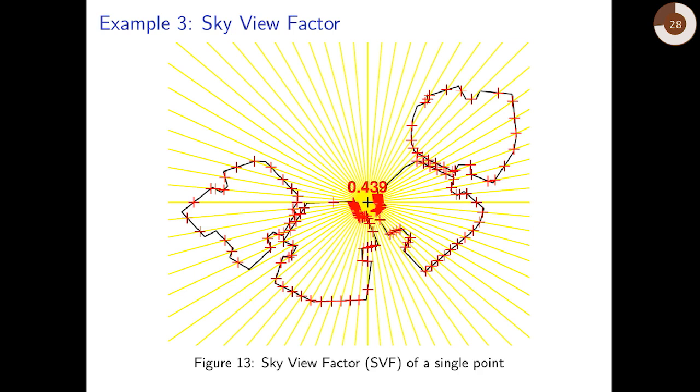Which can be visualized as follows. Here in the center we can see the queried location. The yellow lines express the different two-dimensional cross-sections. In each one of them sky view factor is evaluated based on intersection with obstacles shown in red, and the average final result is 0.44.